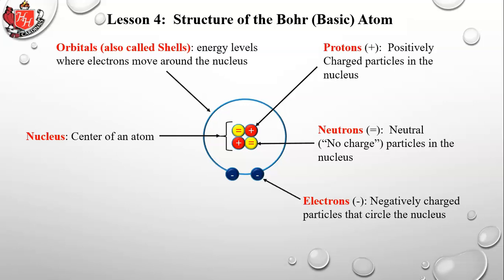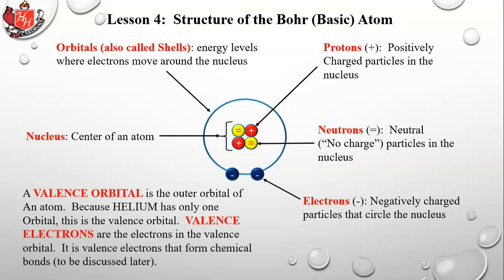Electrons are negatively charged particles that circle the nucleus because they're attracted by the protons. They have energy so they don't fly into the nucleus, but they circle it in energy levels. The valence orbital is the outer orbital of an atom; valence electrons are the electrons in that orbital, and it is those valence electrons that form chemical bonds.